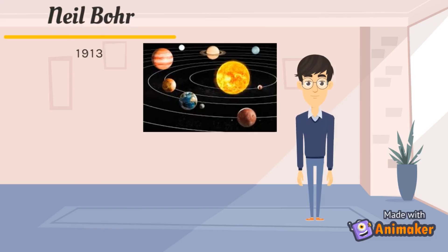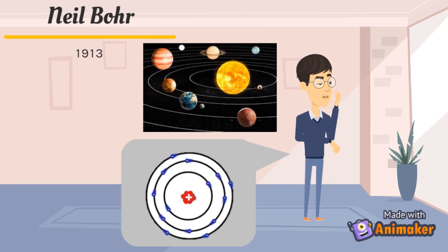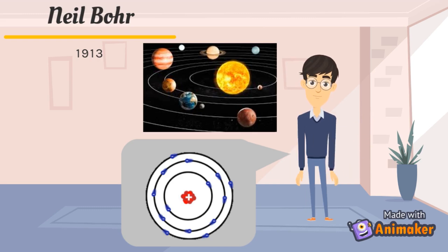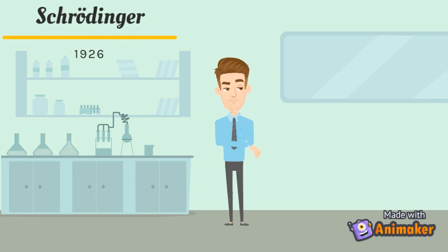Bohr improved on Rutherford's model. He proposed that electrons orbit around the nucleus. The electrons are attracted to the nucleus and move around it in orbits of fixed shape, like the solar system. But why do the electrons not lose energy and crash into the nucleus? The electrons should have quantized energy to remain stable in their orbit.